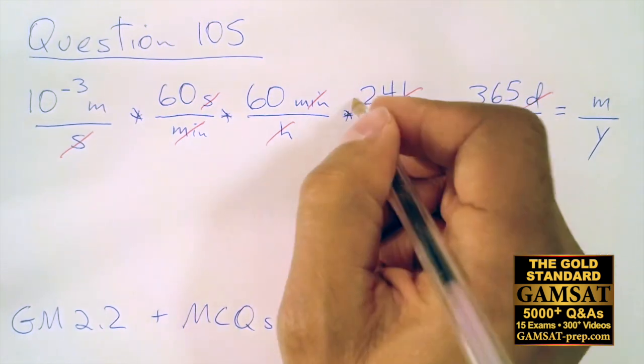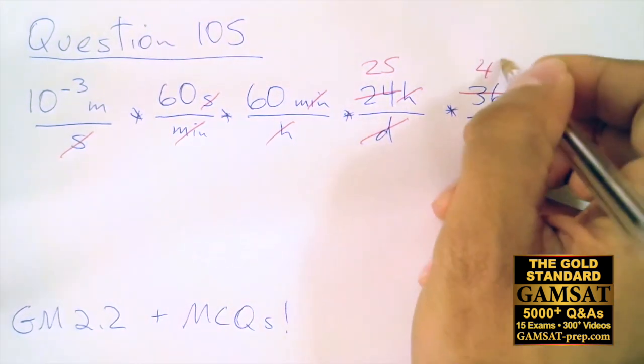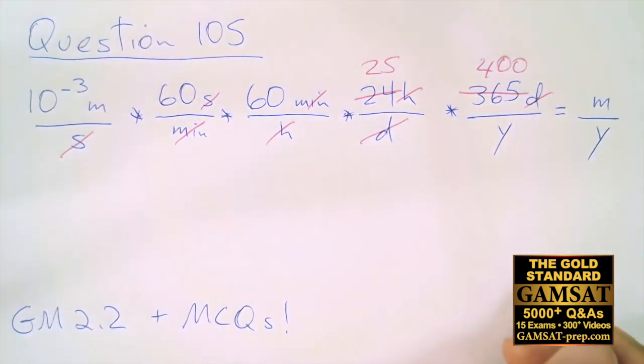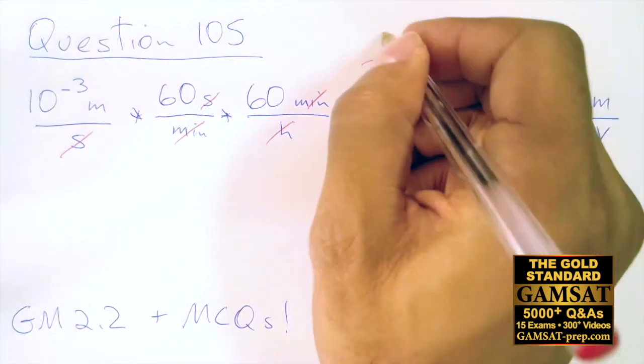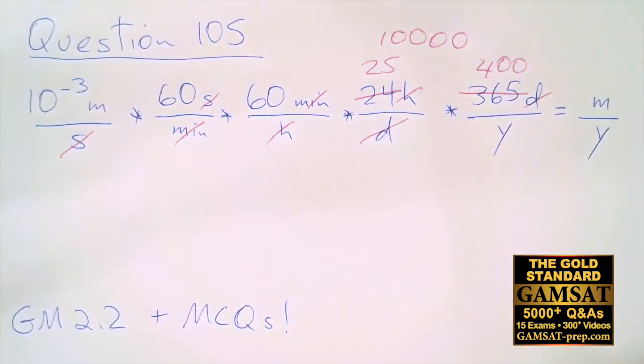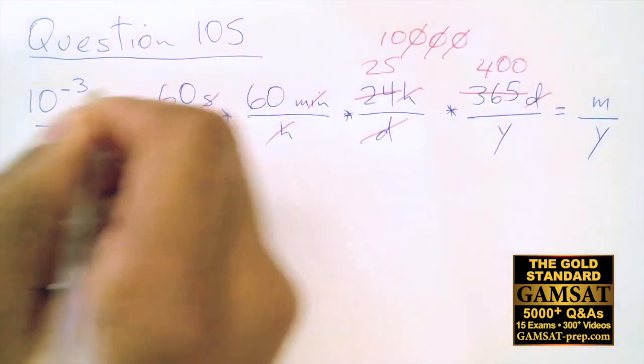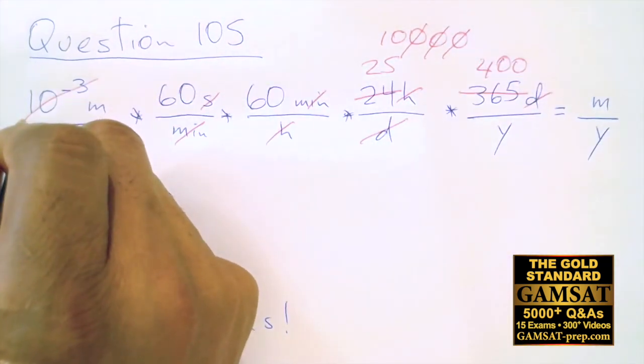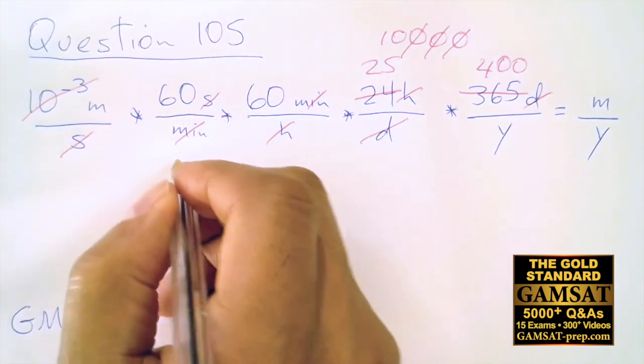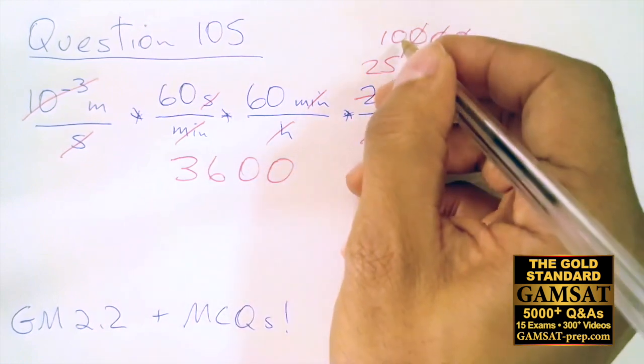Again, because the answer choices are so far apart, we can make estimates. This is 25, this will be 400. 4 times 25 is 100, and there's two zeros left over: 1-2-3 zeros gets rid of 10 to the minus 3. 60 times 60 plus one zero.